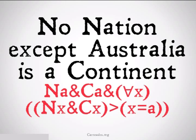We can also do things like no and except. No nation except Australia is a continent. What we're saying here is Australia is a nation, and Australia is a continent, and for all X, if X is a nation and X is a continent, that implies that X is identical to Australia.